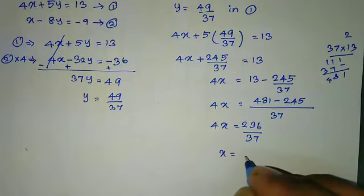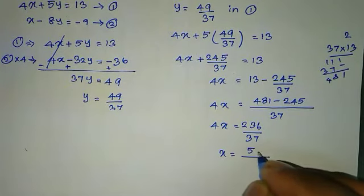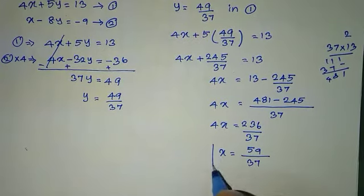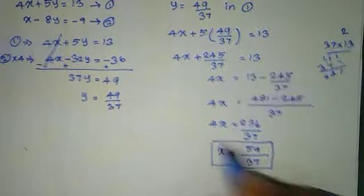So x equal to... dividing by 4... x equal to 59 by 37.